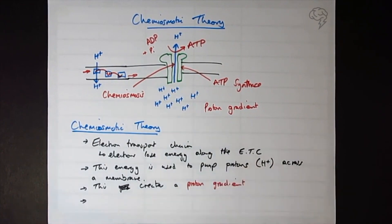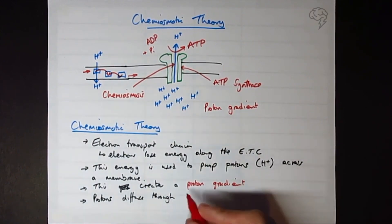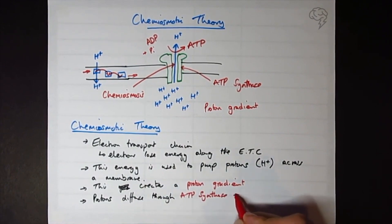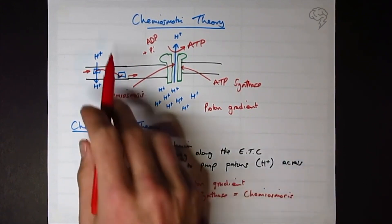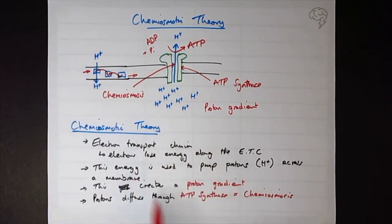You can say the protons diffuse through ATP synthase, and this is chemiosmosis. It's a bit like osmosis, obviously, so it's from high to low concentration. It's passive because we've used the energy over here to build up the gradient. It's like chemical osmosis, if you like.